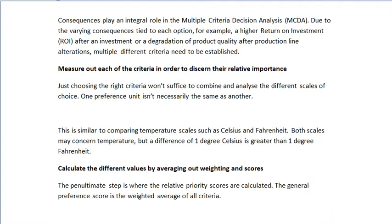Next, measure each of the criteria in order to discern their relative importance. Just choosing the right area wouldn't suffice — you need to combine and analyze the different scales of choice, since one preference unit is not necessarily the same as another. This is similar to comparing temperature scales such as Celsius and Fahrenheit: both concern temperature, but a difference of one degree Celsius is greater than one degree Fahrenheit.